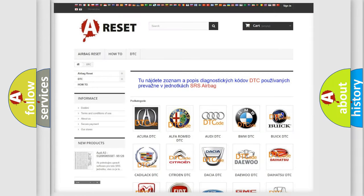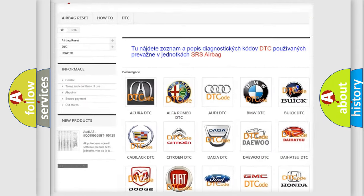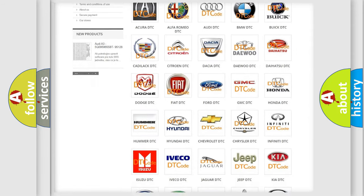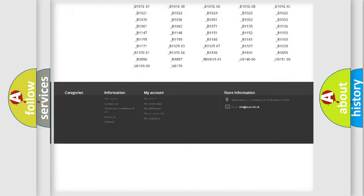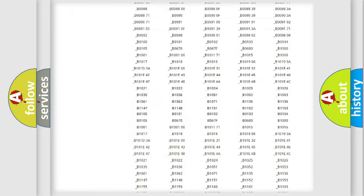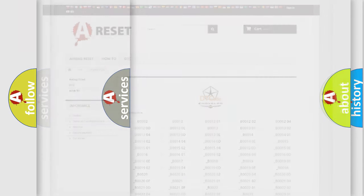Our website airbagreset.sk produces useful videos for you. You do not have to go through the OBD2 protocol anymore to know how to troubleshoot any car breakdown. You will find all the diagnostic codes that can be diagnosed in Chrysler vehicles.